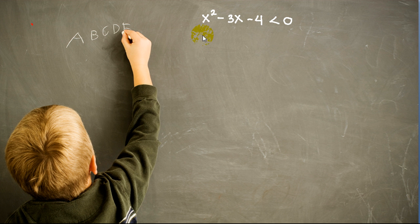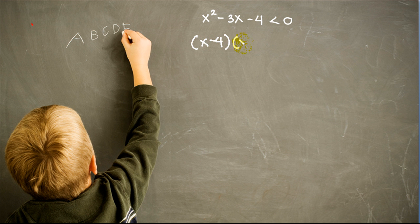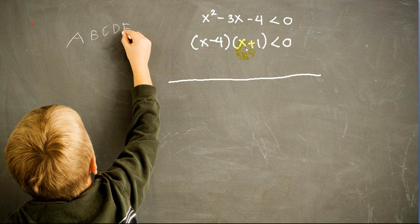Let's see another example using a simplified version of the previous method. Suppose we have this inequality. If it is not already in the required form, move all terms to the left hand side so that the right hand side equals 0. Then factor the left hand side. In this case we factor into (x - 4)(x + 1) less than 0. The simplified method uses a number line, placing the points where the left hand side equals 0, which are x equals negative 1 and x equals 4.